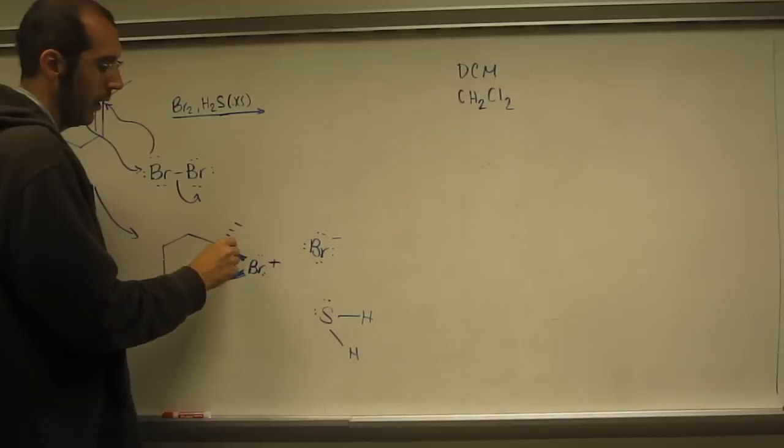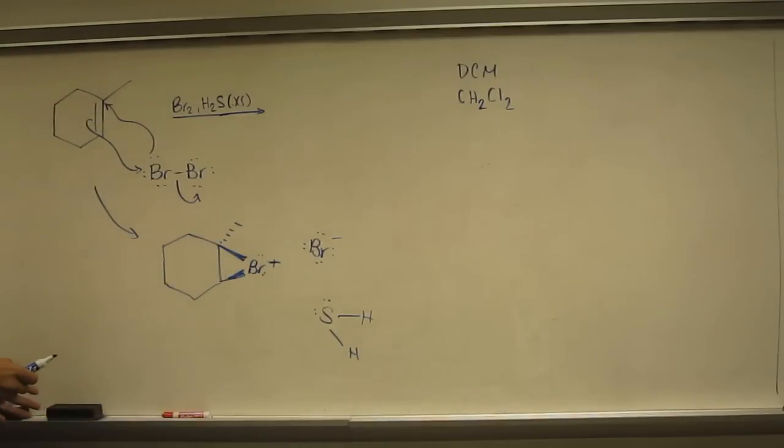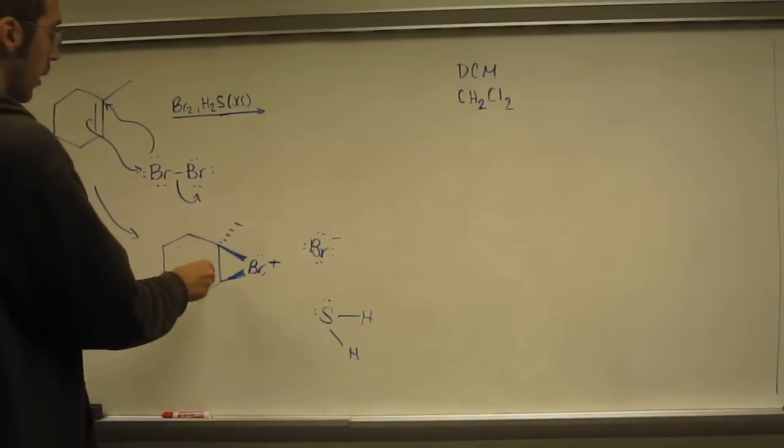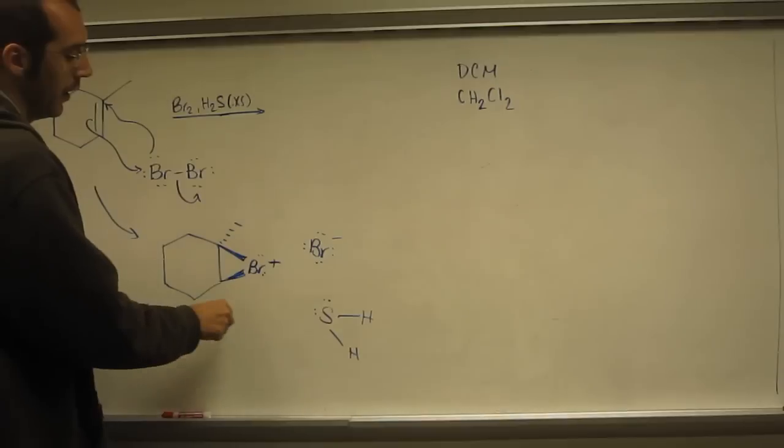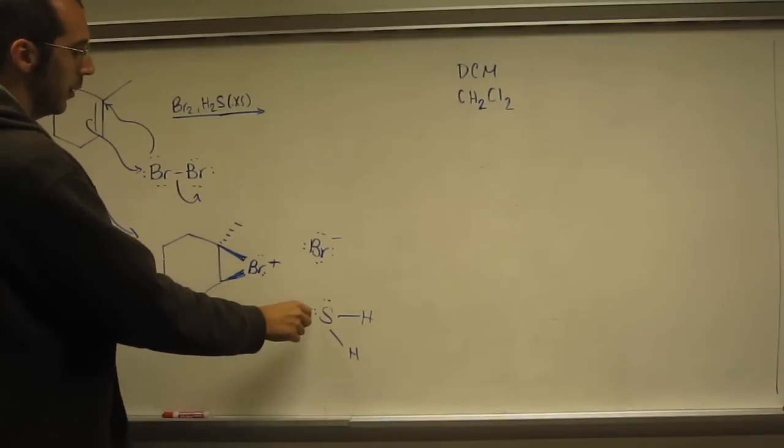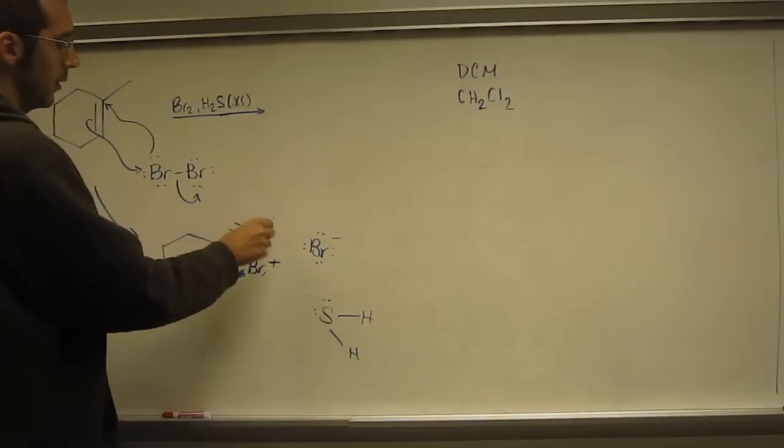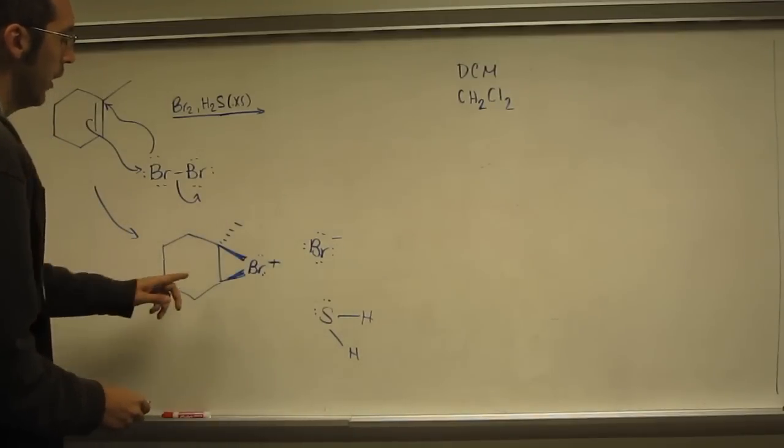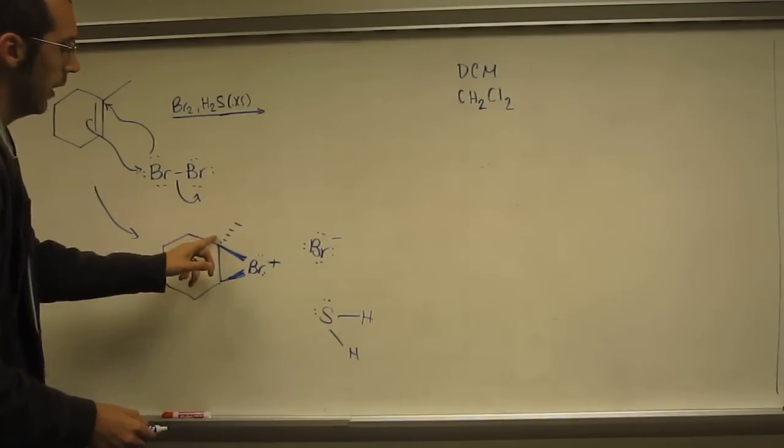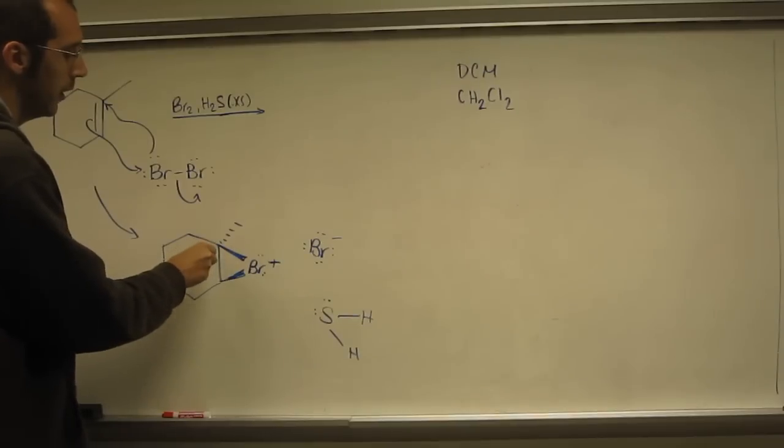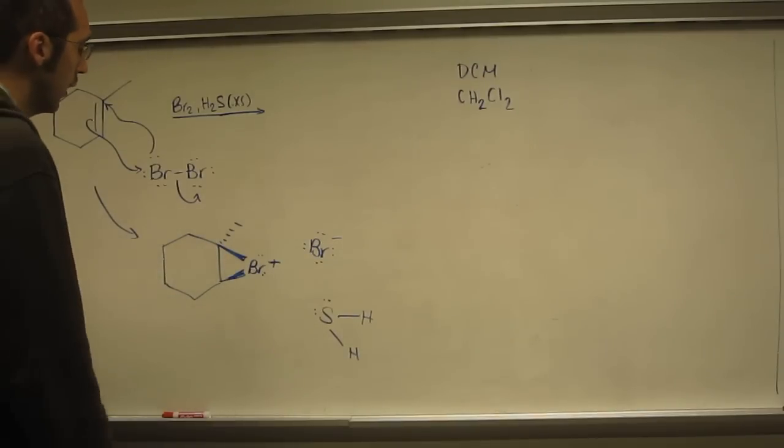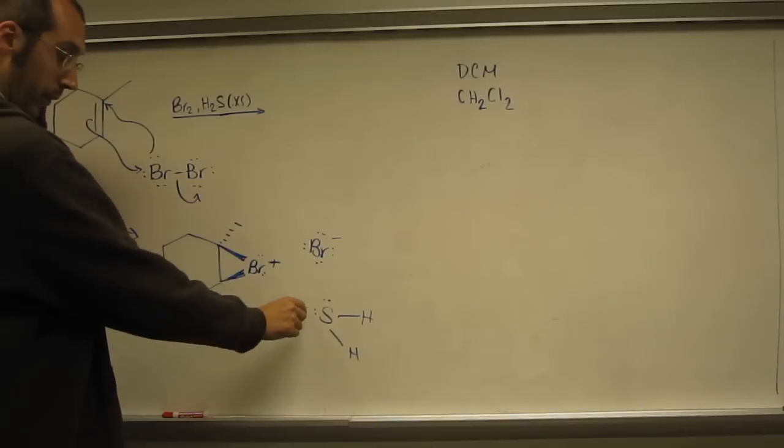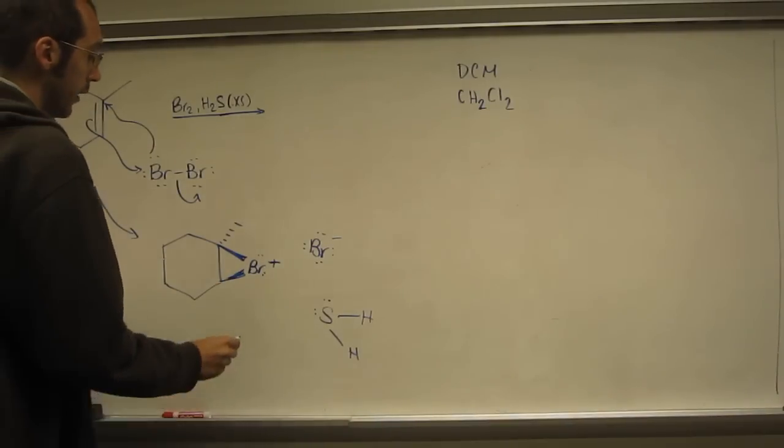So the bromonium ion is very electrophilic at these two carbons. So you're going to have this SN2 reaction. So this is going to be a good nucleophile. This is a good electrophile, of course. But you have a choice of which carbon to react. Of course, this carbon here is very sterically hindered. This carbon here is less sterically hindered. So it's only going to react on this side.